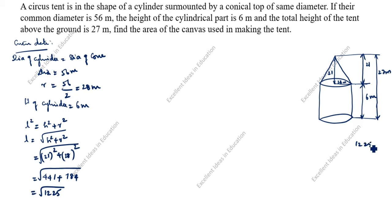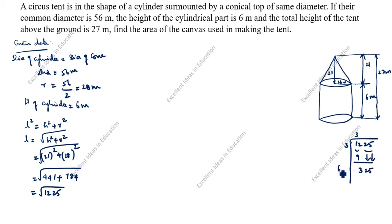To find √1225, we use the long division method. We get 3, then bring down 25, giving 65 × 5 = 325, leaving remainder 0. So √1225 = 35.